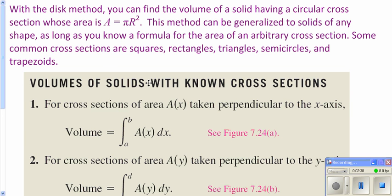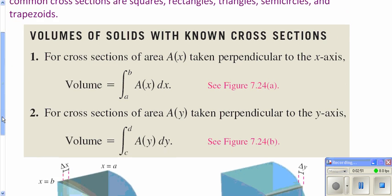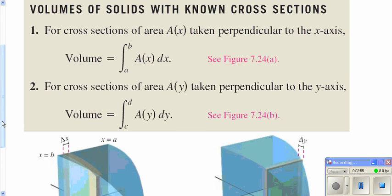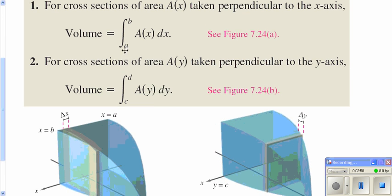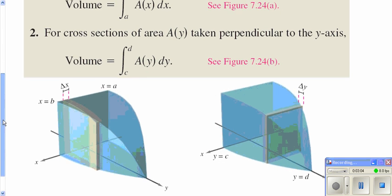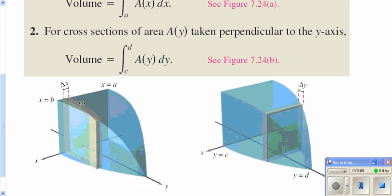Now, besides having volumes of revolutions, we can have shapes that are perpendicular to our axes, whether they are squares, rectangles, triangles, semicircles, and so on. Basically, it boils down to whenever you're dealing with a known cross-section: if it's perpendicular to the x-axis, you integrate from a to b with respect to x and integrate your area of your shape. Or if you're integrating because you're perpendicular to the y-axis, you integrate with respect to y.